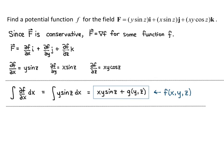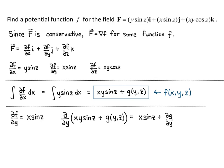Now I'll use the j component. I know that ∂f/∂y equals x sine of z, as determined above. So I take the f found in the last step and compute the partial derivative with respect to y of xy sine of z plus g(y, z). This gives x sine of z plus ∂g/∂y. Notice that x sine of z is exactly what we want ∂f/∂y to equal.